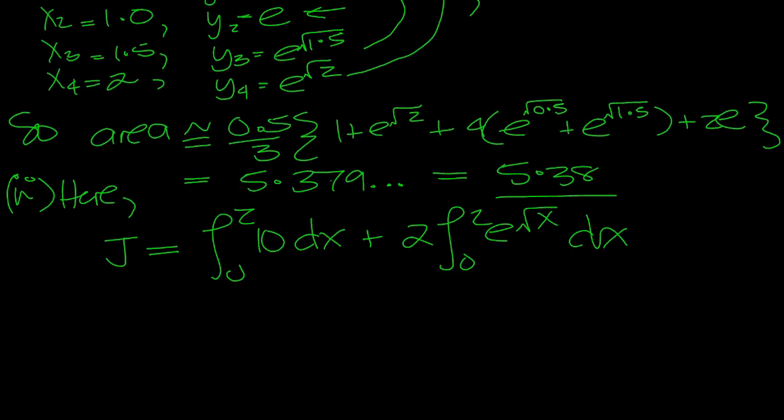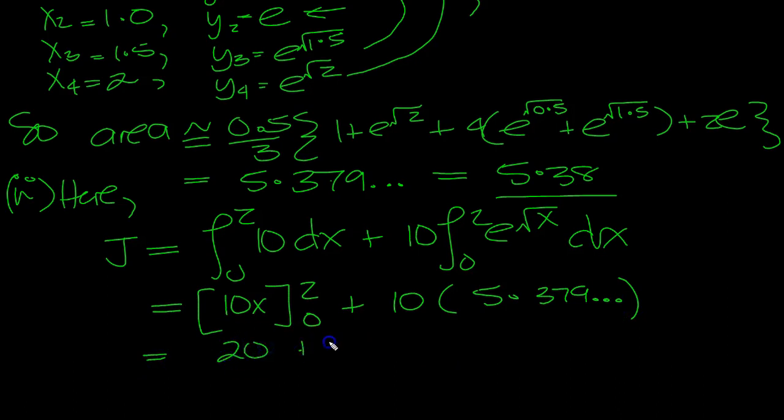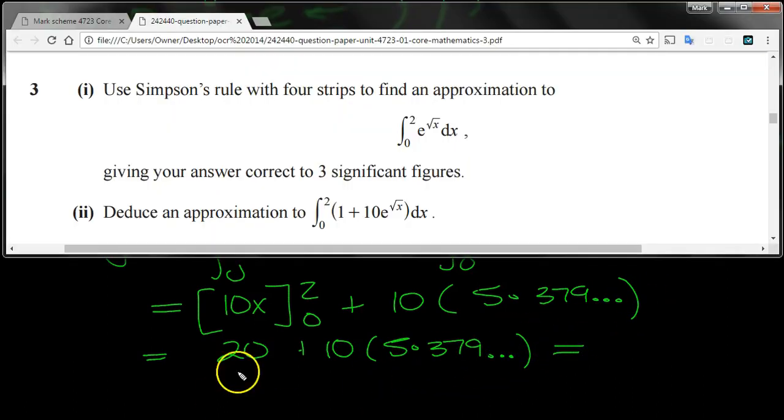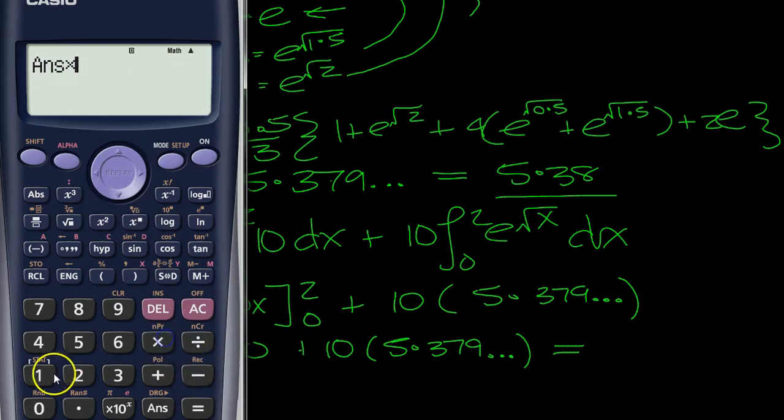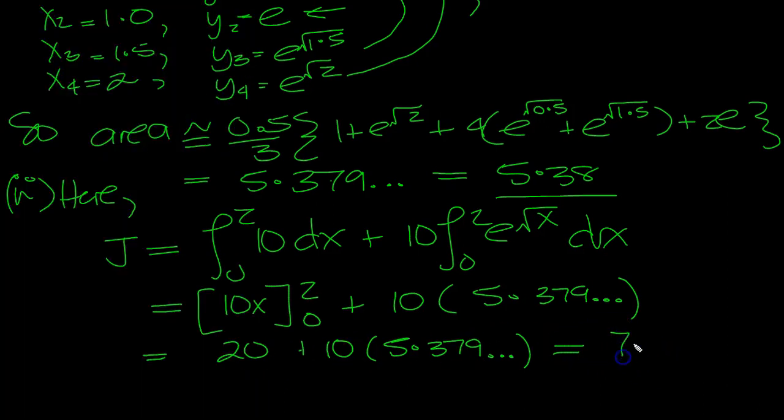10 lots of 1 plus 10 lots, wasn't it, here? Which is equal to 10x between 2 and 0 plus 10 times 5.379, which is equal to 20. And it wanted the question to how many. Let's do it then. That number times 10 plus 20. 73.792. Which equals 73.8 to three significant figures.